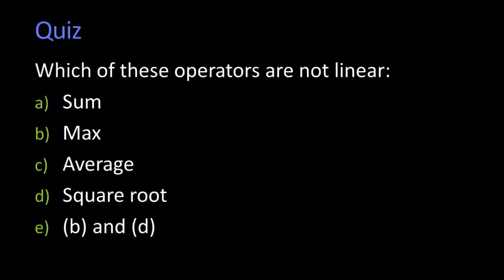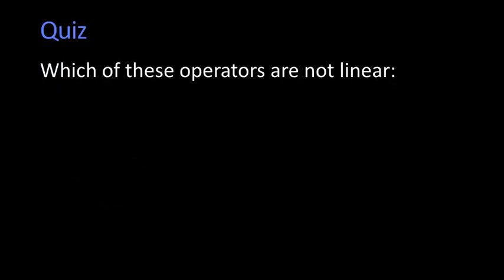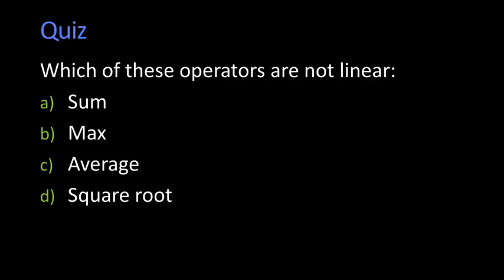Question, which of these are not linear? A, the sum, B, the max of a function, C, an average, D, a square root, E, B and D. Okay, well that's pretty straightforward. A sum, well, sums are sums, that's linear. A max, of course, doesn't change. If I've got two functions and I'm taking the max, it's determined by the single biggest value, and the rest of the function doesn't matter. And of course square root, well that's not going to be linear because square roots are never linear.